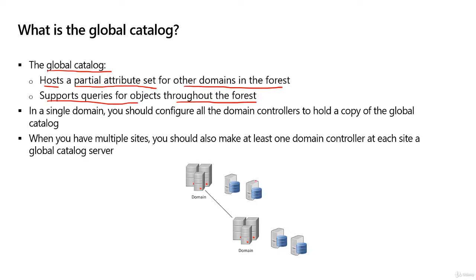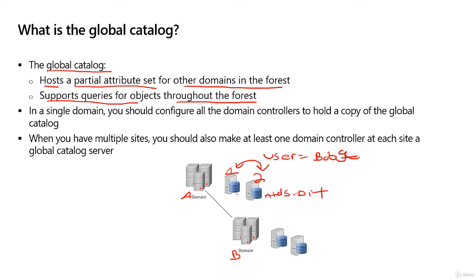What that actually means — I have a domain, I'm just going to call this domain A and domain B. These two domain controllers here, I'm just going to call them domain controller 1 and 2. The objects created on these domain controllers are for domain A. So if you went here and created a user named Bob, Bob only replicates between domain controllers 1 and 2 because they are in the same domain. So really this database file, which is named ntds.dit, it's the same file, just a replica of it on each of these and it replicates changes.